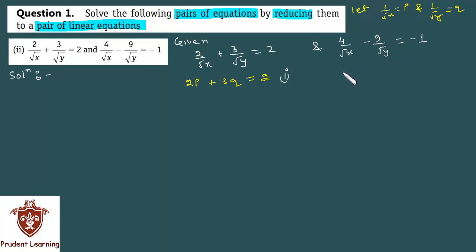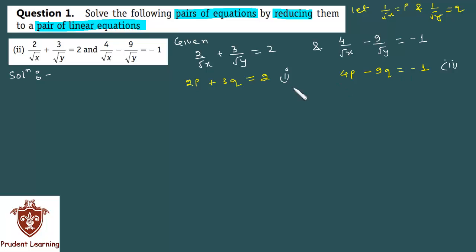The second equation becomes 4p minus 9q is equal to minus 1, call it equation 2. Now we will have to solve these two equations to find p and q, and then finally find x and y.